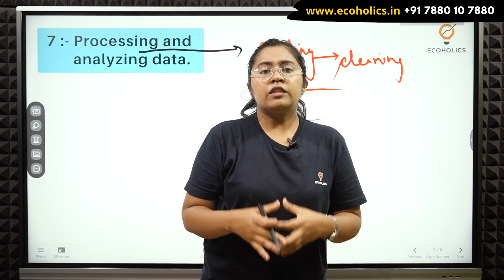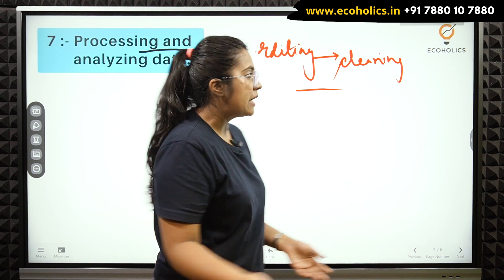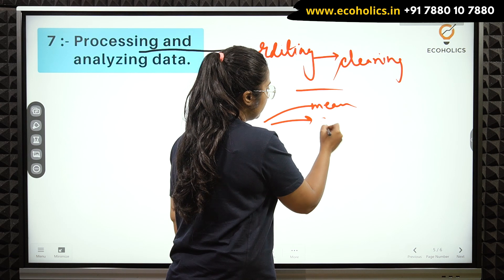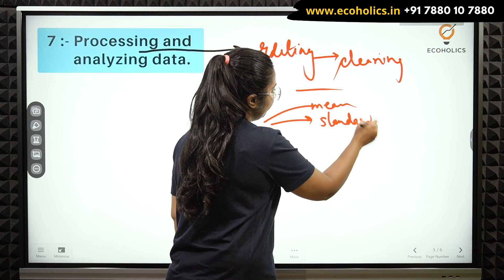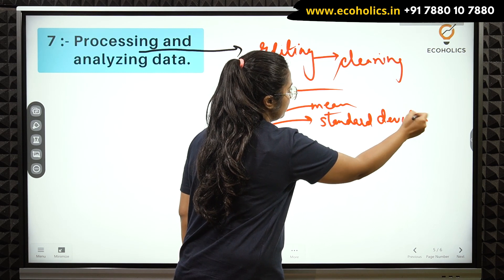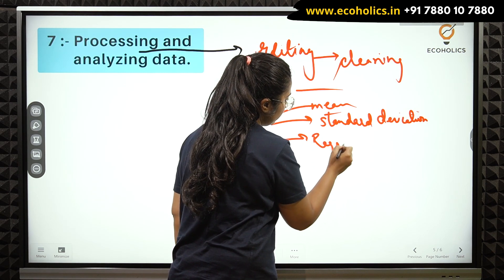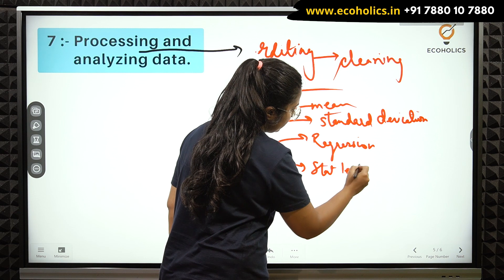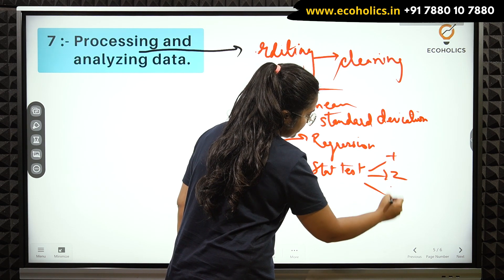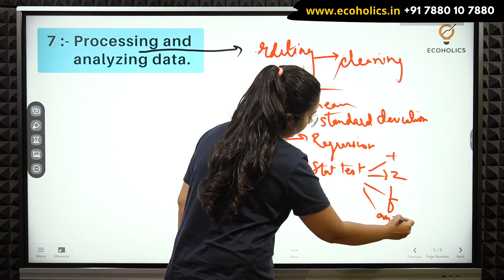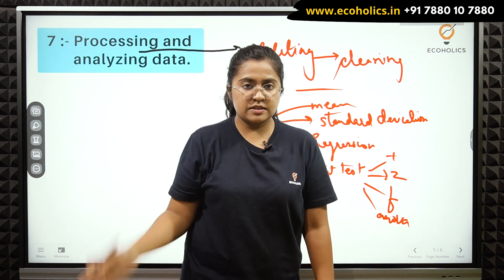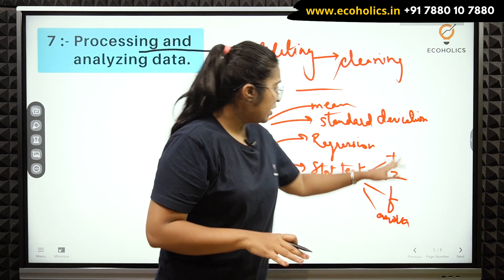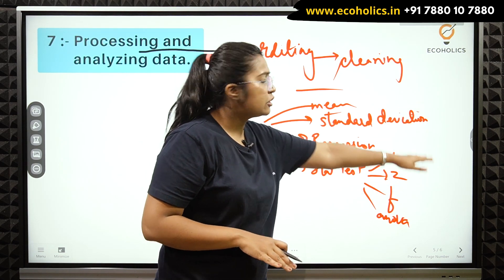After processing, the analysis begins through a variety of tests performed on the data. For example, you can start with mean or standard deviation, or there can be regression, variation, or various statistical tests like t-test, z-test, f-test, ANOVA, and ANCOVA. There are a variety of tests available during the processing of data, and of course these will give certain results.